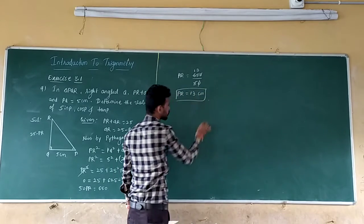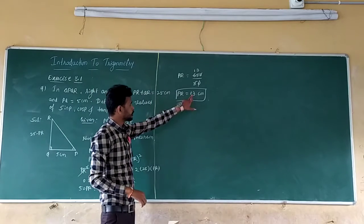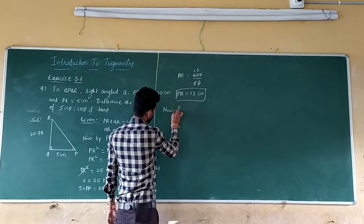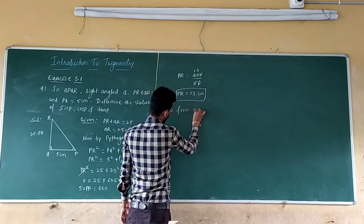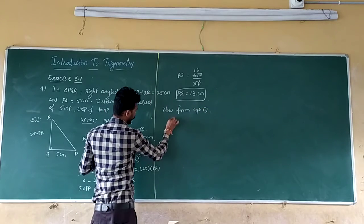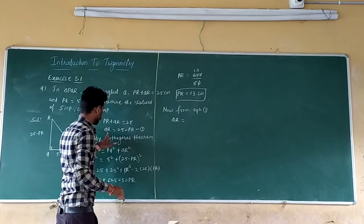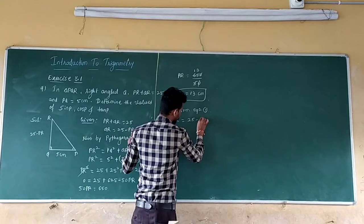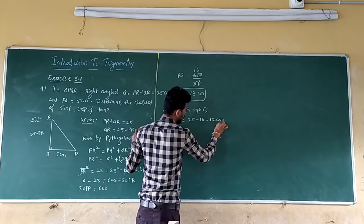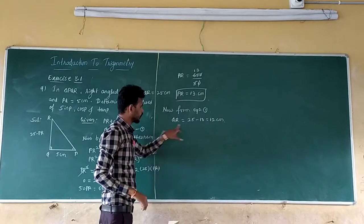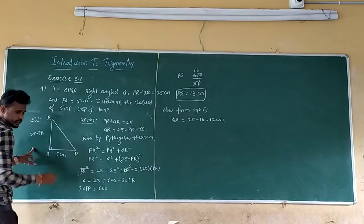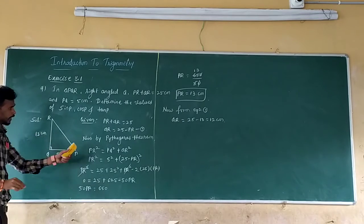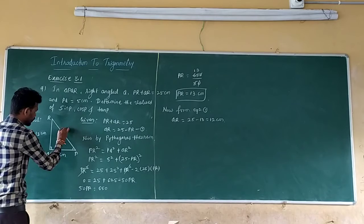From equation 1, what you can write: QR which is equal to 25 minus PR. So what do you get? 12 centimeter. That is QR is 12 centimeter. So QR is 12 centimeter, PQ is 5 centimeter, and PR is 13 centimeter.